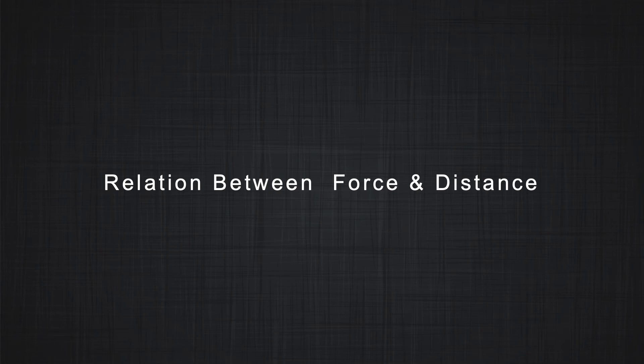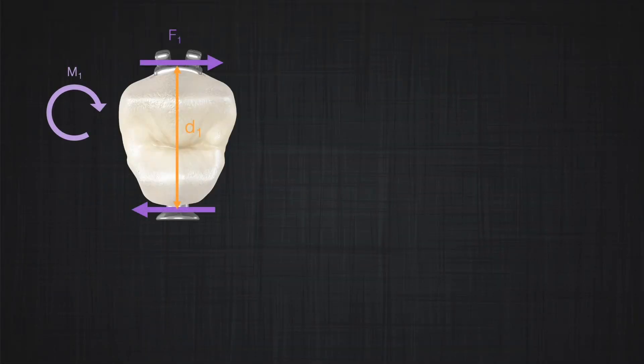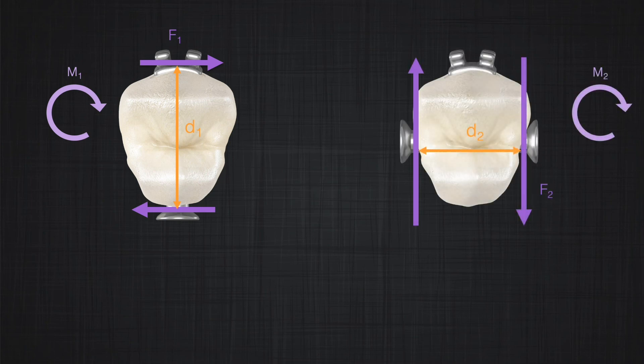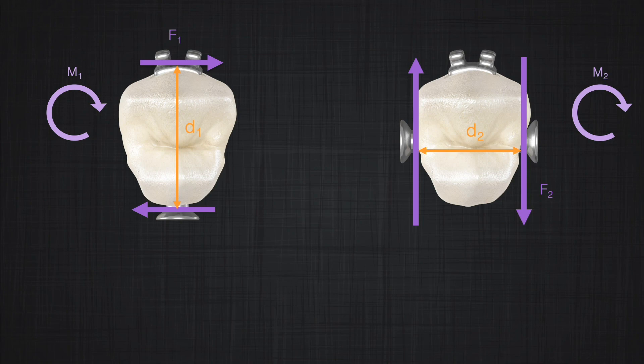The last principle is the relationship between force and distance. Sometimes it is not possible to maintain the same distance between the forces. Therefore, if we want to produce the same moment, we can compensate by increasing the magnitude of the force. For example, if application of couple F1 and F2 produces moment M1 counterclockwise at distance D1, and we rotate the couple so the new distance D2 is half of D1, we increase the force twice to ensure we produce the same amount of moment.